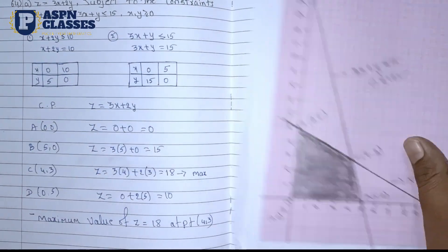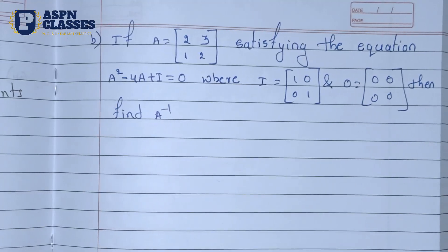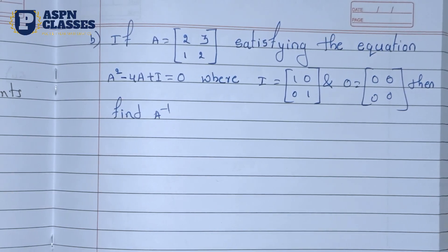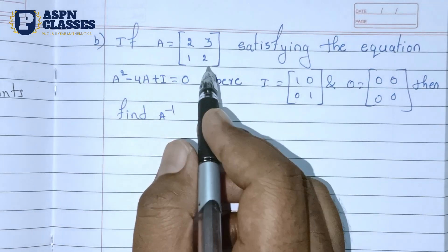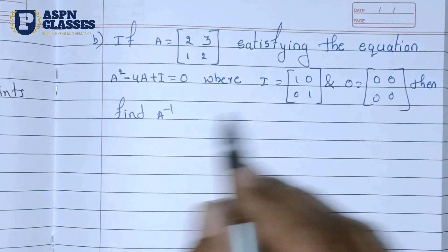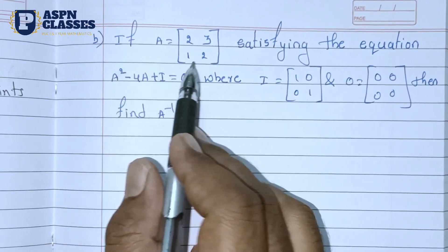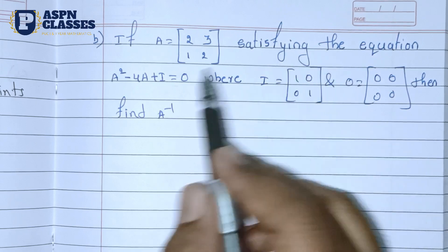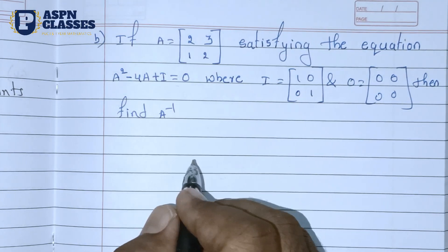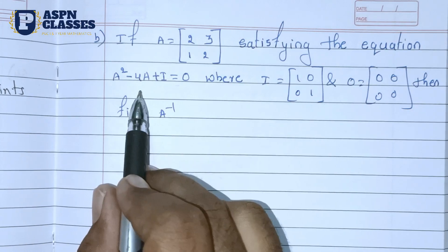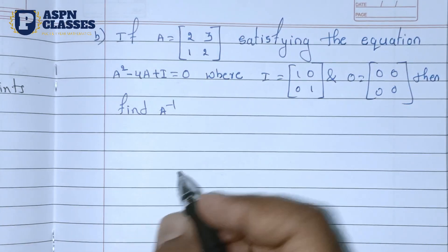That is 4 marks for part B, total. Now the next question: if a 2×2 matrix satisfies the equation A² minus 4A equals 0 (or I), find the inverse. Show that and then use this equation to find the inverse using A inverse equals 1 divided by determinant of A times adjoint of A.